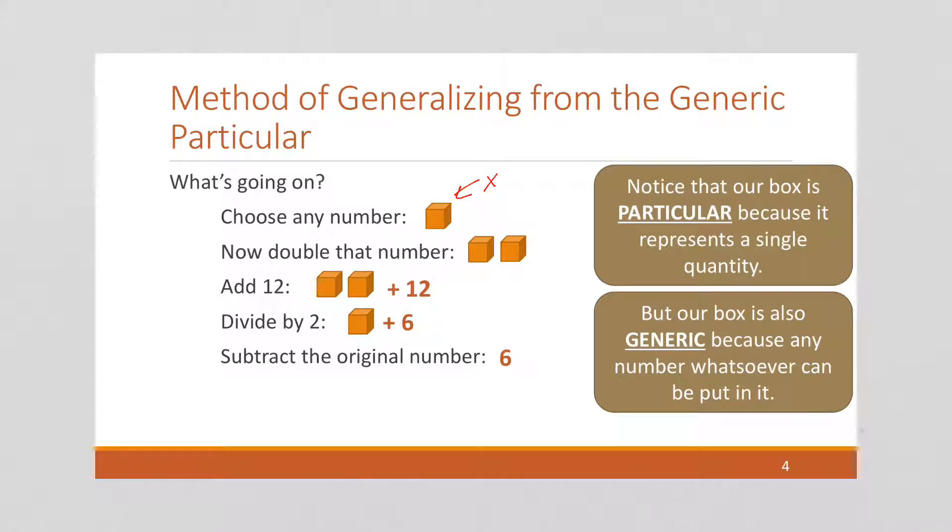And then we do these manipulations. If we start whatever number we started with, we double it. So now we have two boxes. We add 12. So now we have two boxes plus 12. We divide by 2. So the two boxes go down to one box and the 12 becomes a 6. And then we subtract our original number, which was the box, leaving, of course, a 6.